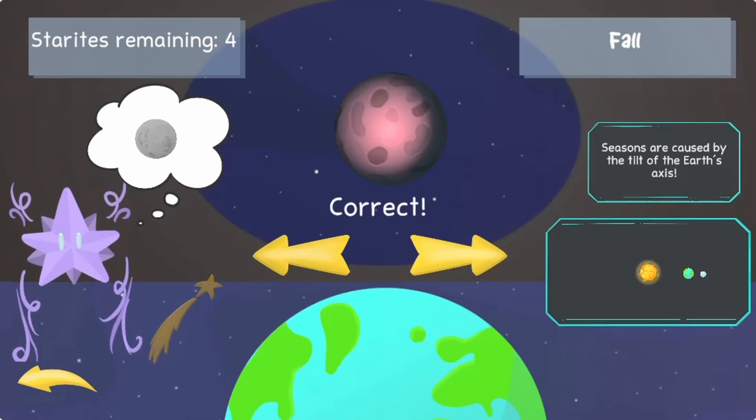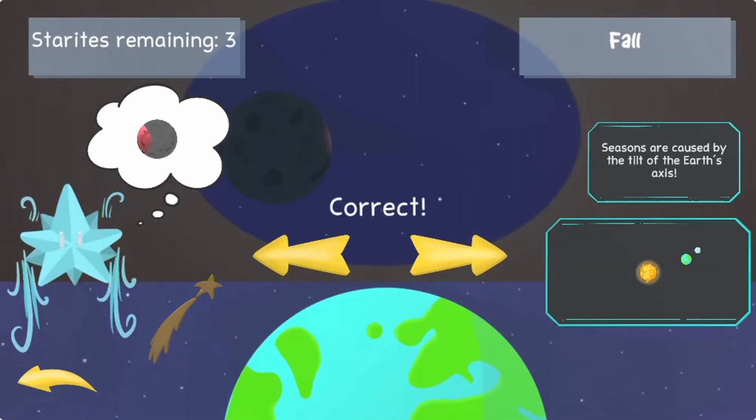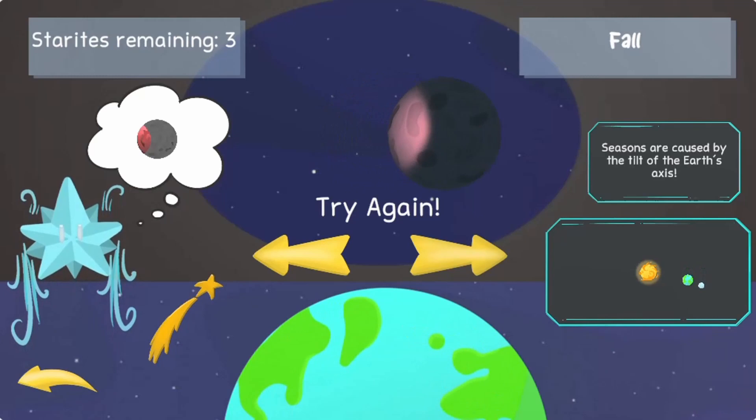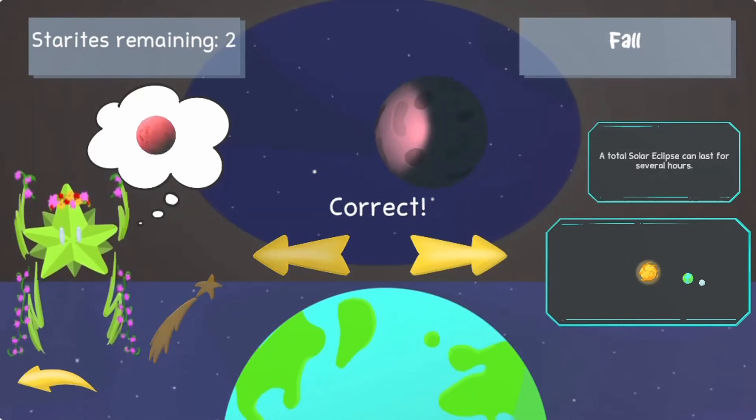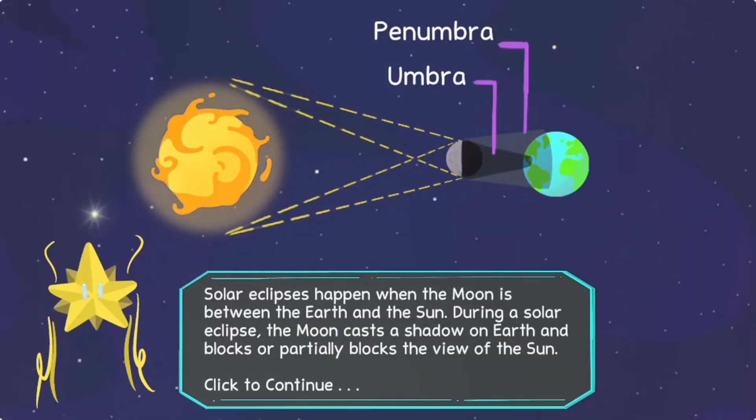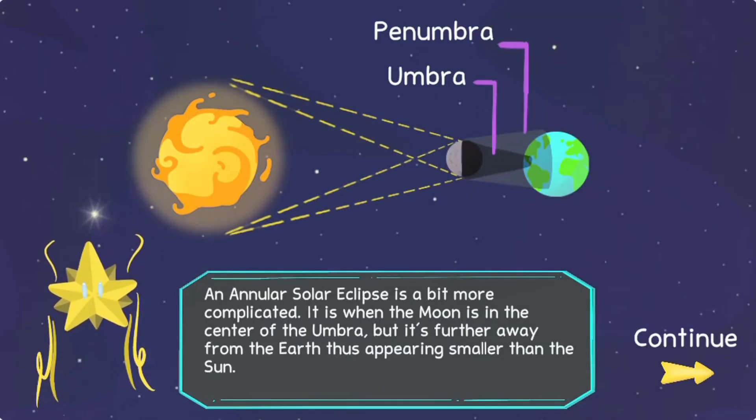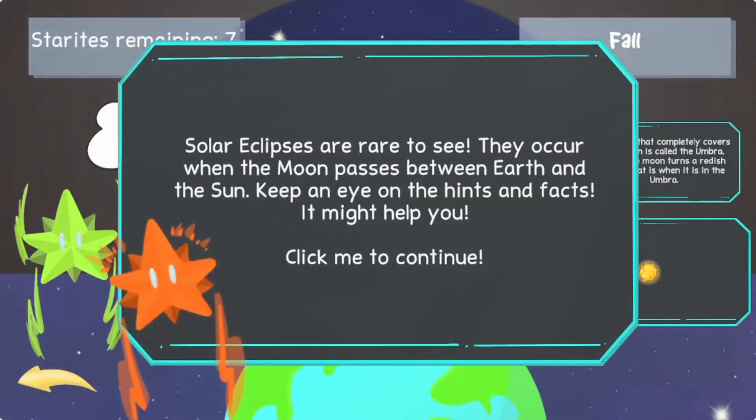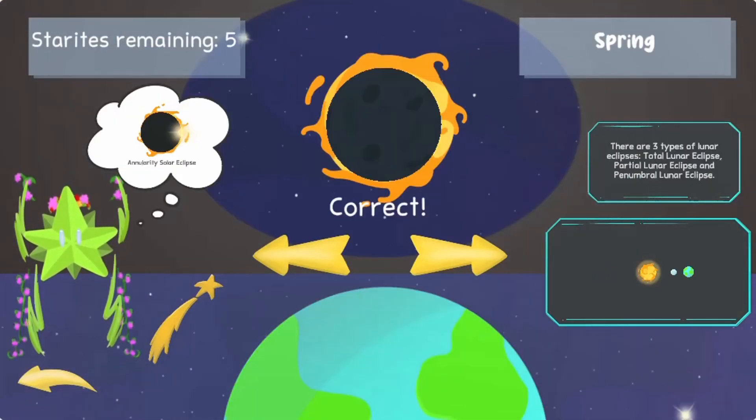Learn about the lunar and solar eclipses and adjust the positioning of the sun, moon, and earth to get the correct answers. Complete all the levels to win the game. Use your knowledge of science to complete this fun and educational game.